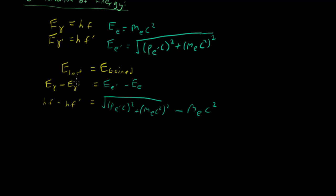Now, what I want to do is to isolate this variable. And the reason why I want to do this will be apparent later on. So let's just say for now that I want to isolate the variable. How would I do this? Well, the first step is to bring this value over to this side. So in doing that, what we have is hf - hf' + m_e c² = √[(p_e' c)² + (m_e c²)²].